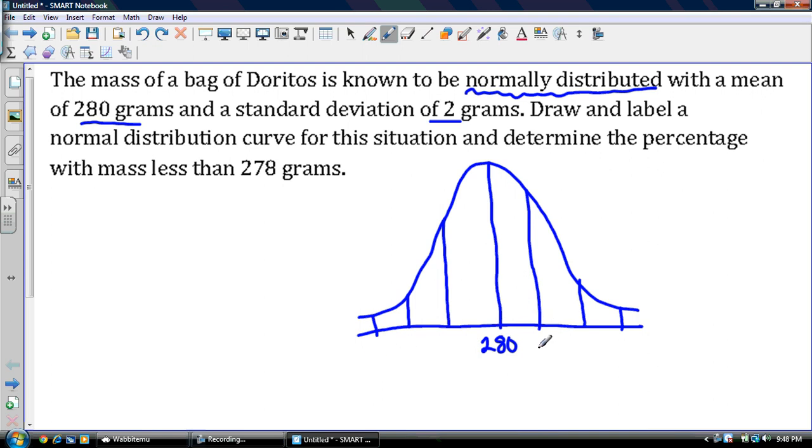So this would be one standard deviation away, so that would mean I would add 282, 284, and 286. And then this way I'm going to subtract, so 278, 276, 274. So with that, I have my standard deviations taken care of. So I got one part of my curve done.